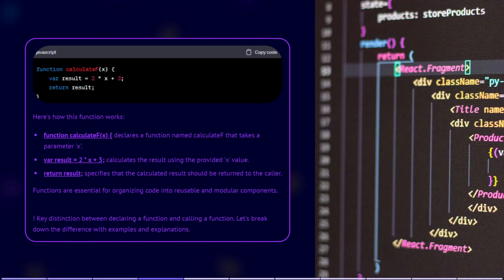We will talk about this a bit later. Functions are essential for organizing code into reusable and modular components. However, there is a key distinction between declaring a function, which is what is happening here, and calling a function. Let's break down the differences with examples and explanations.